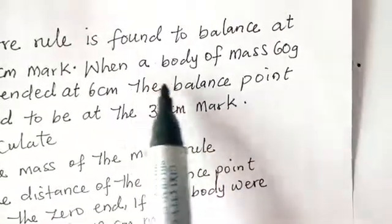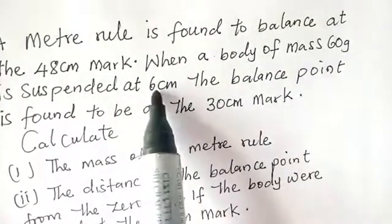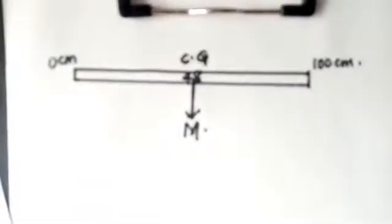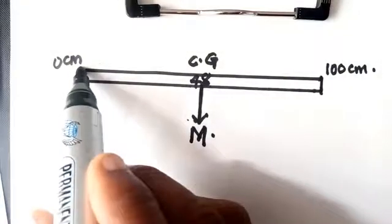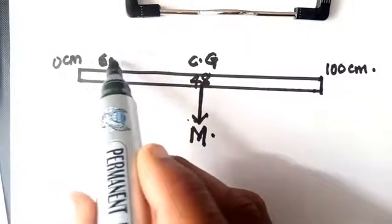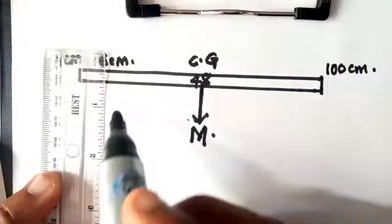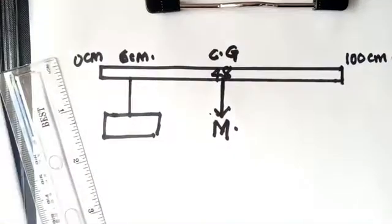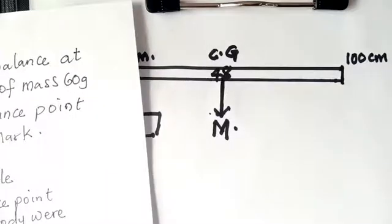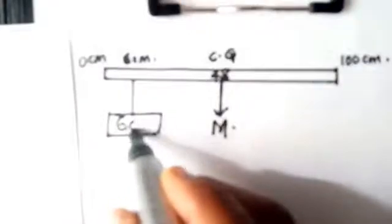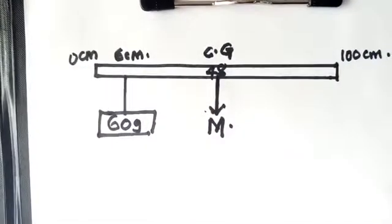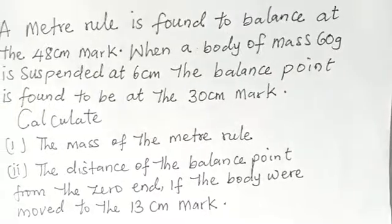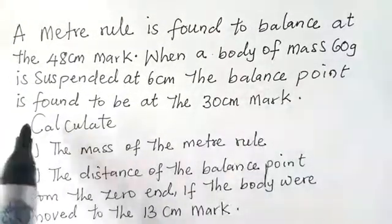Moving on, they say that when a body of mass 60 grams is suspended at 6 cm. Remember this thing is not drawn to scale. Let's assume that this place is 6 cm. At 6 cm we suspended 60 grams. The weight of the body at that point was balanced at 60 grams. Then the new balance point is found to be at 30 cm mark.